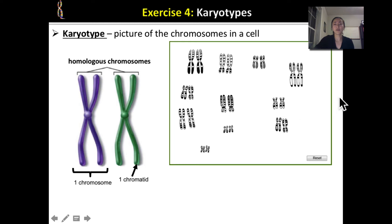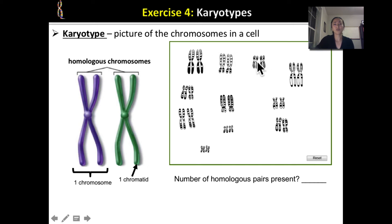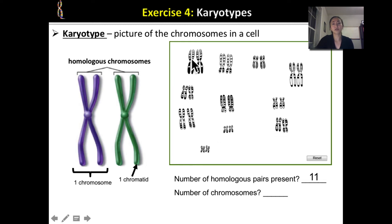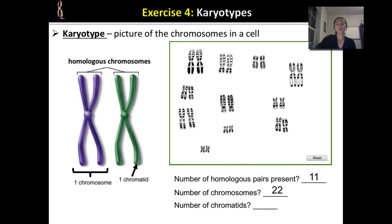Let's count chromosomes in this karyotype. There are 11 homologous pairs. Each pair has 2 chromosomes, so there are 22 chromosomes total. And since each chromosome is duplicated with 2 chromatids, we have 2 times 22 equals 44 chromatids in this picture.